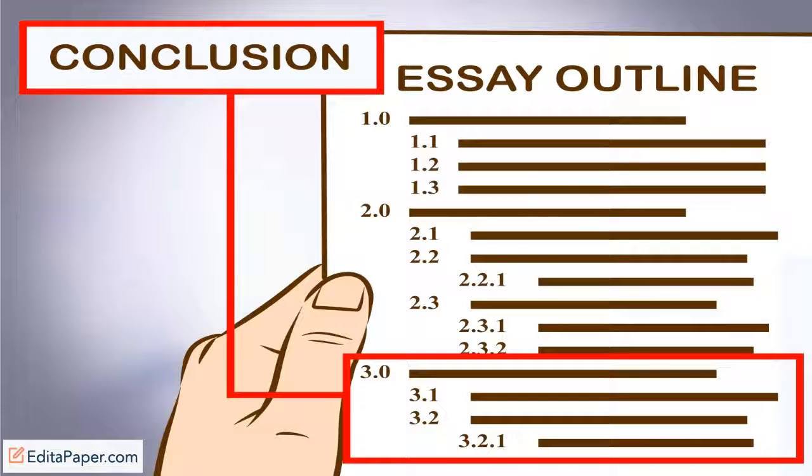Think of the section title as the topic sentence for your paragraph and the subsection as the tiny details that support the topic. Your subsections need to flow naturally from one to another.